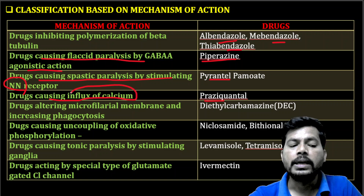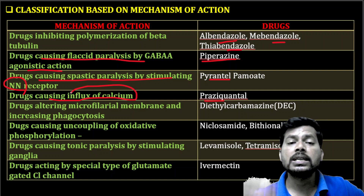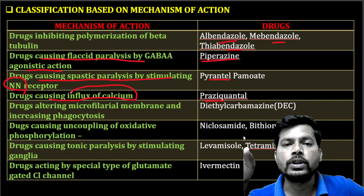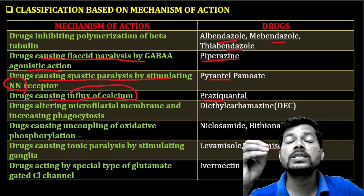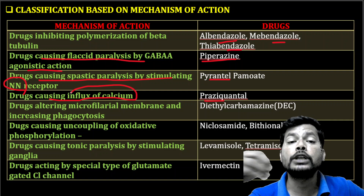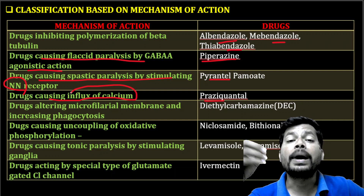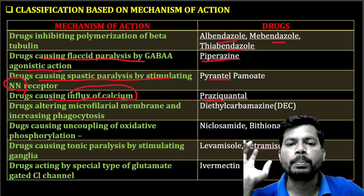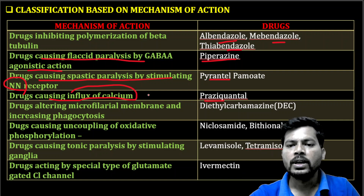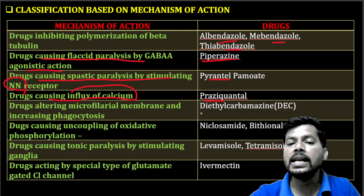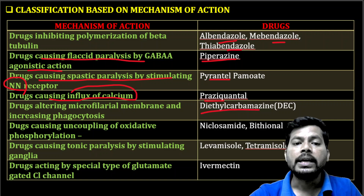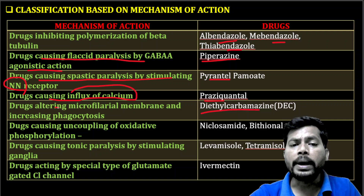Next, praziquantel causes a continuous influx of calcium into the worm. This continuous influx of calcium leads to paralysis of the muscle of the worm.